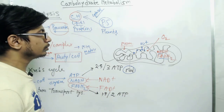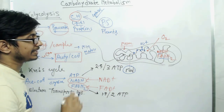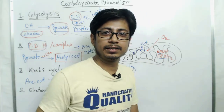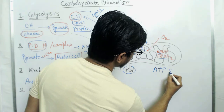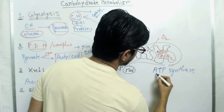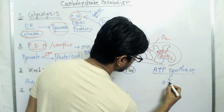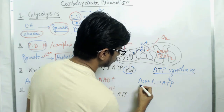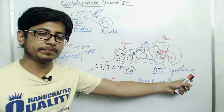NADH and FADH2 donate electrons into each of the electron transport chain complex molecules, which transfer those electrons further. At the end there is an enzyme known as ATP synthase, which produces ATP by adding inorganic phosphate to ADP.